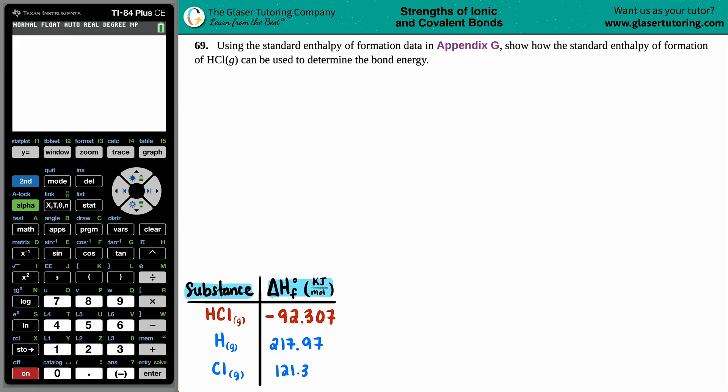Number 69, using the standard enthalpy of formation data in Appendix G, show how the standard enthalpy of formation of HCl gas can be used to determine the bond energy.